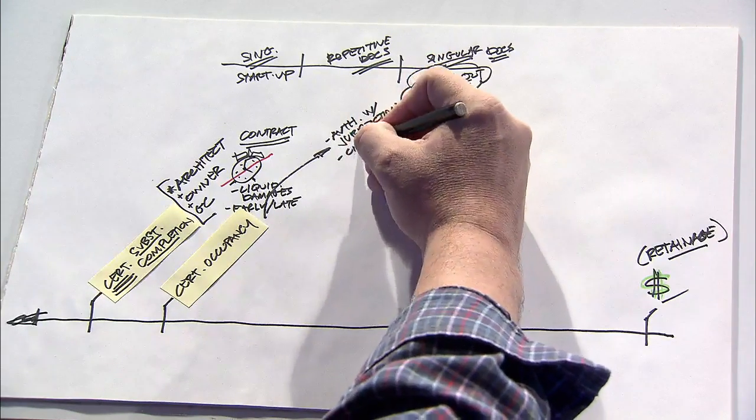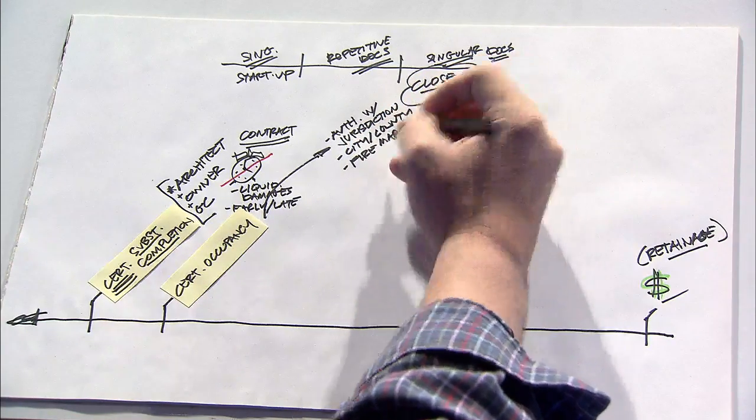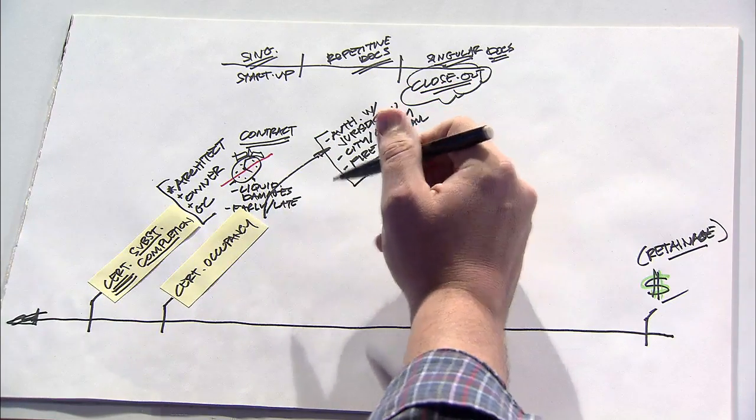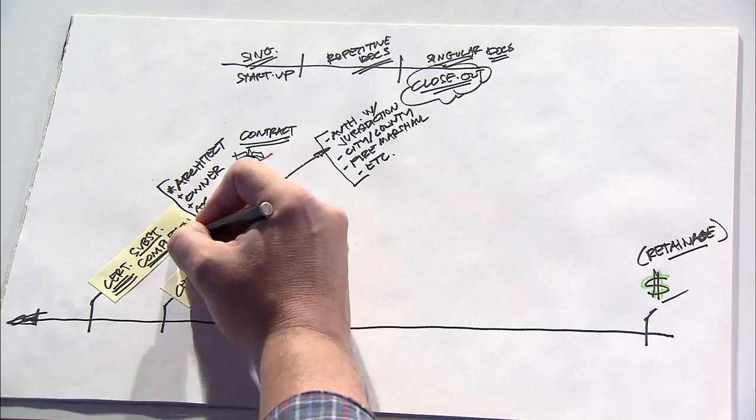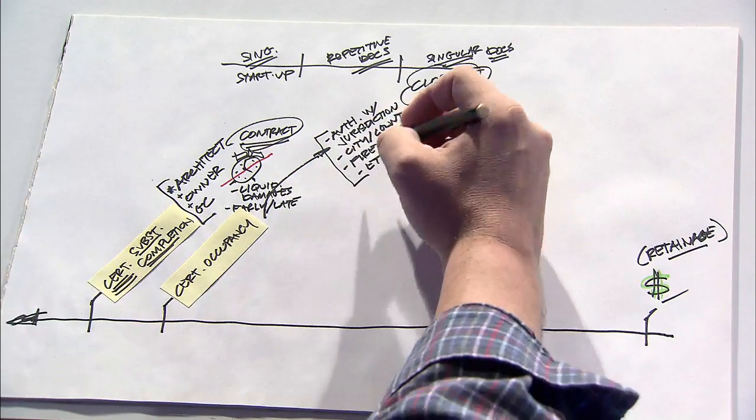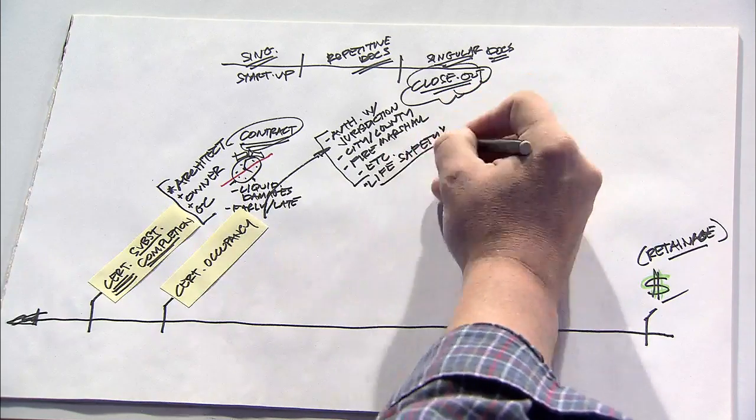The primary way is the Certificate of Occupancy is issued by the authority with jurisdiction, and this would typically be a city or a county. In some cases, it could be the fire marshal or someone else, but usually is issued by a public official. And the primary difference is that substantial completion is based on contractual scope, and the Certificate of Occupancy is based on life safety issues for the public.